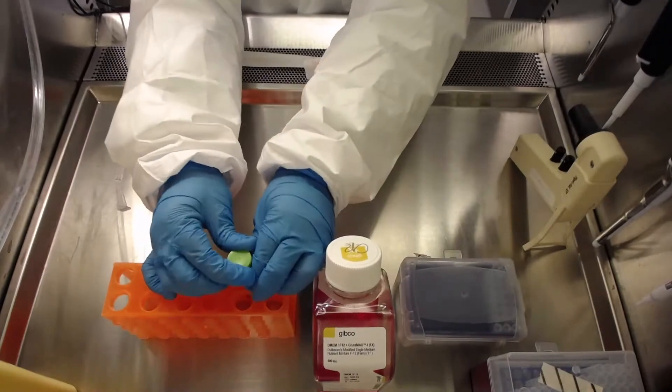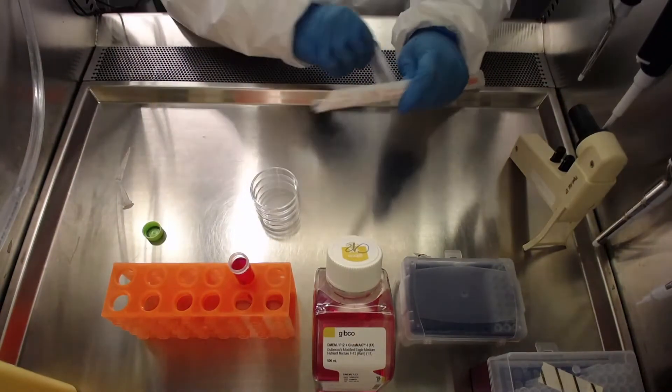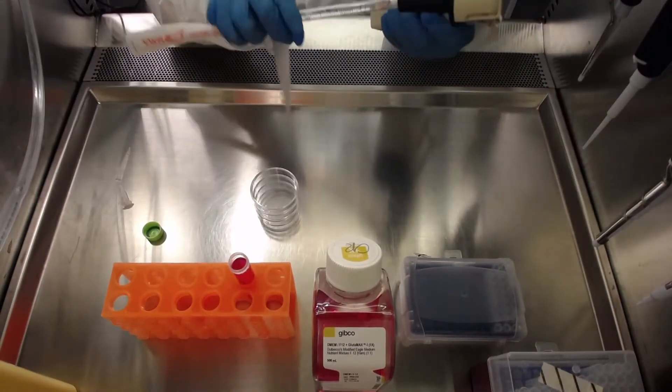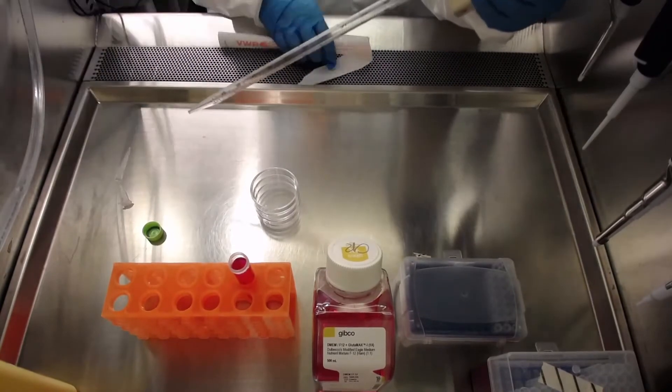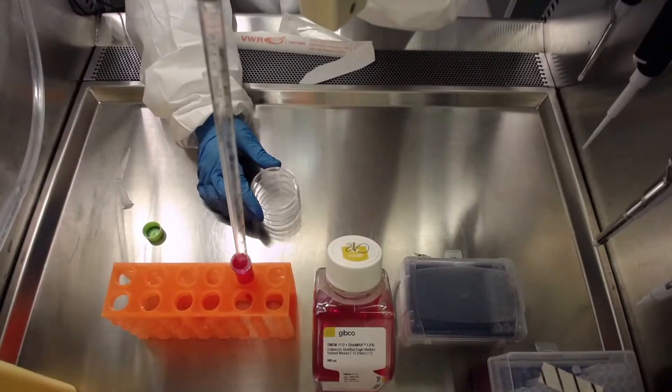Open the tube and using a sterile pipette transfer matrigel solution to the appropriate dish. In this case, we will add 2.5 ml per 6 cm dish.